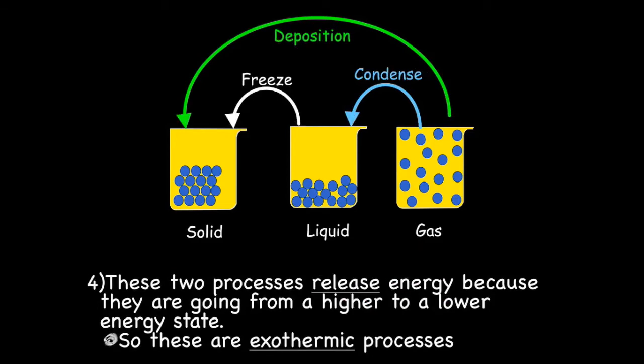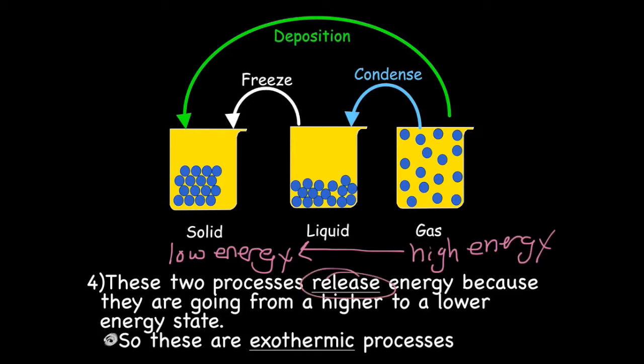We can also do phase changes in the other direction. Going from a gas to a liquid is condensing. Going from a liquid to a solid is freezing. And going from a gas to a solid is called deposition. Solids have the lowest energy and gases have higher energy. This time though, we're going from a higher energy state to a lower energy state. So in this case, we're releasing energy because we're going from a higher to a lower energy state. So we call these processes exothermic.